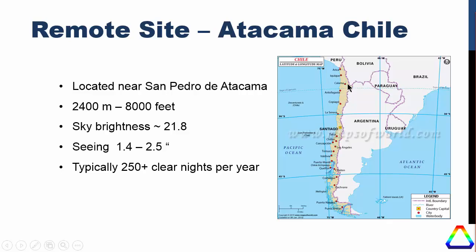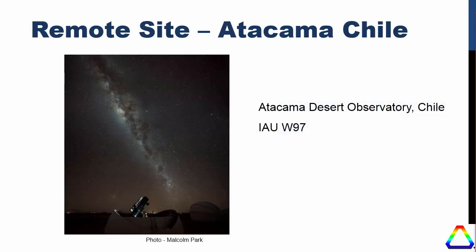As a result of that experience I went and visited the site in Chile where I am now. It's located near San Pedro de Atacama — the main international entry point is Santiago, and then you go up to Calama, located right at the edge of the Bolivian border. It's at 2,400 meters or about 8,000 feet. The sky brightness is very dark at about 21.8 with just a little light from San Pedro in the distance. Seeing is about 1.4 to 2.5 arc seconds — it's on the valley floor, but that's the trade-off for the facilities, power, and internet available there. We typically have well over 250 clear nights per year.